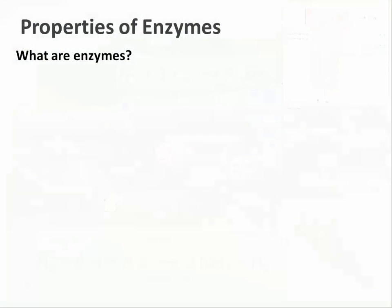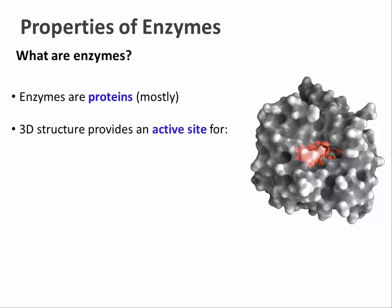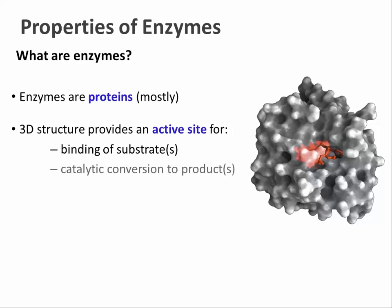What are enzymes? Most enzymes by far are proteins, although a small number of important ones are RNA molecules. The 3D structure of enzymes has evolved to provide an active site — that is, a docking surface or a binding pocket — to bind one or several substrates, and then to catalytically convert those substrates to products.